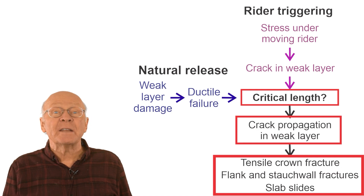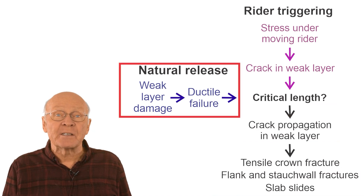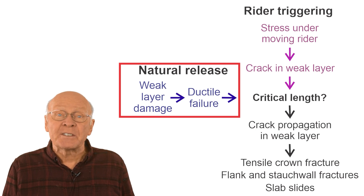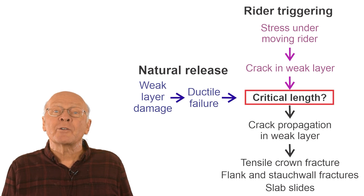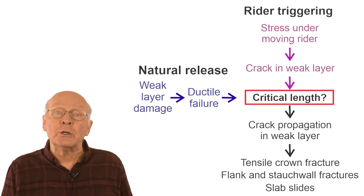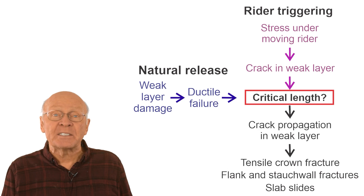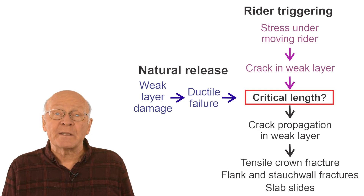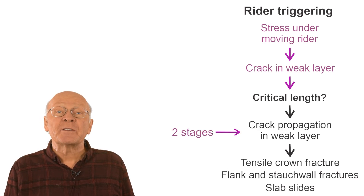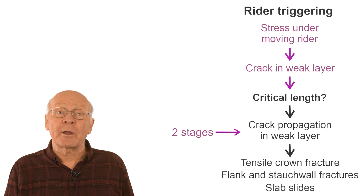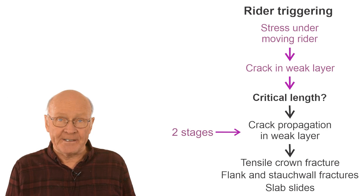In a few minutes, we'll look more at the early stages of dry natural slab avalanche release. Research suggests the critical crack length can range from less than a slab thickness to perhaps 10 times the slab thickness. Also in a few minutes, we will explain that there are two stages to dynamic crack propagation in the weak layer.